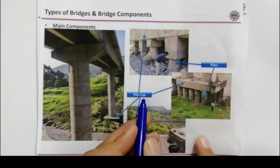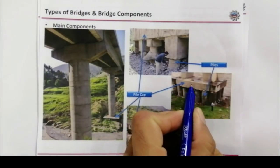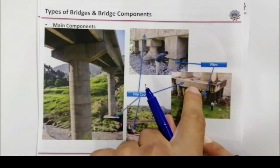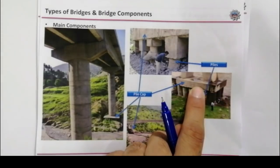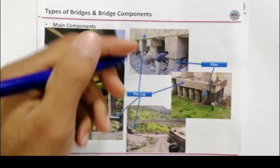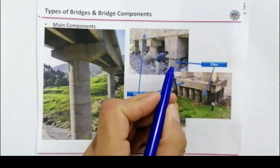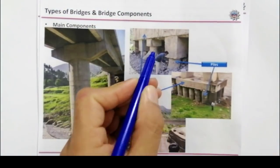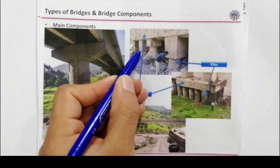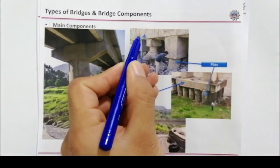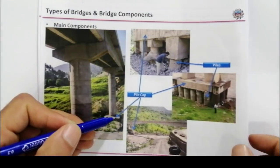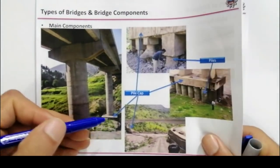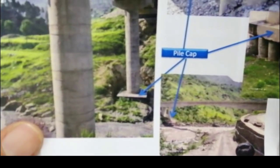This is the pile cap. You can see this arrow shows you the pile cap above the pile — that is called a pile cap. Let me focus the camera to show you clearly. These are piles, and this is the pile cap. You can also see clearly in this picture what a pile cap looks like.